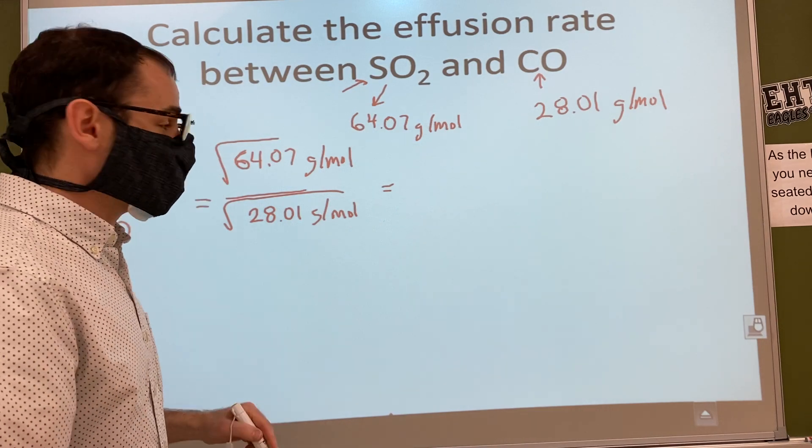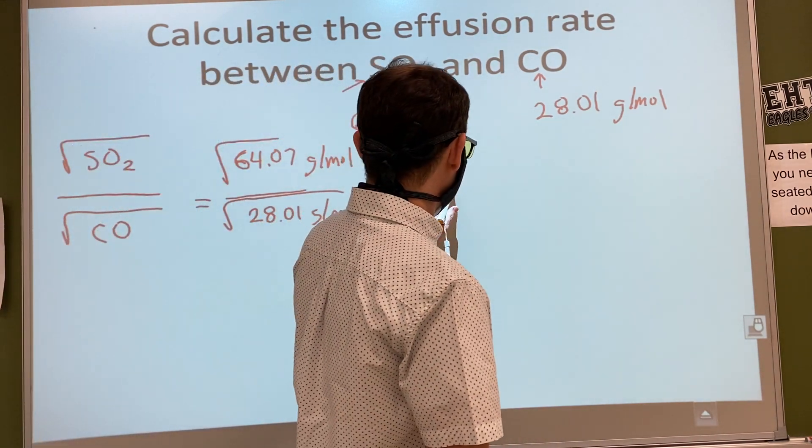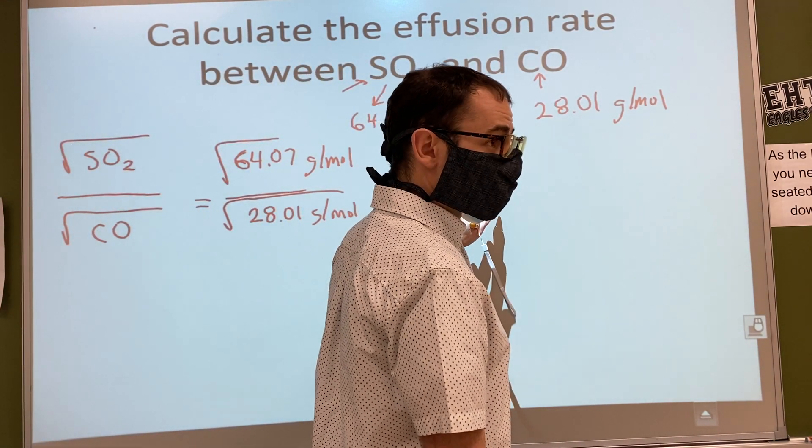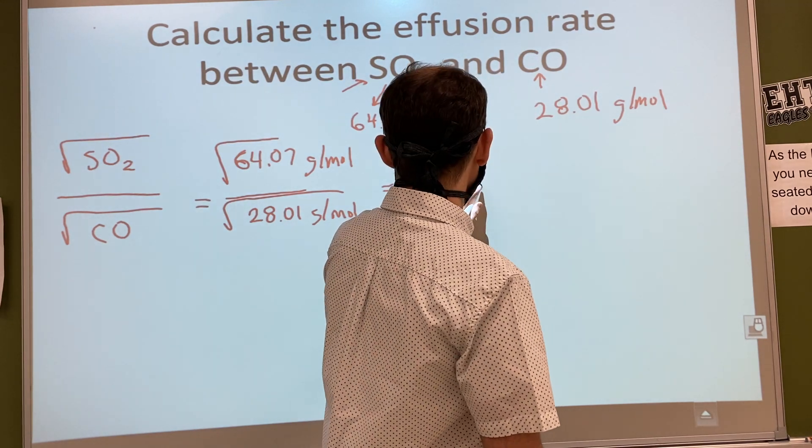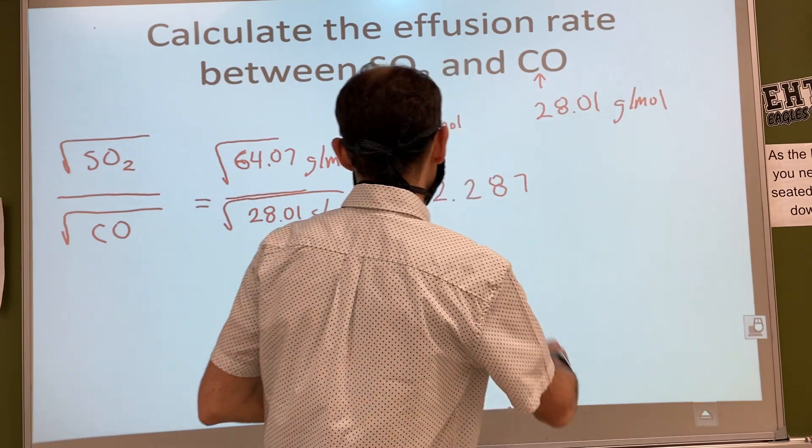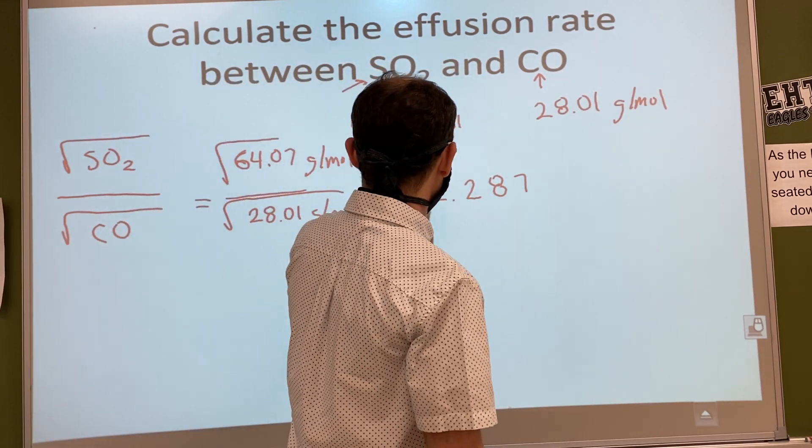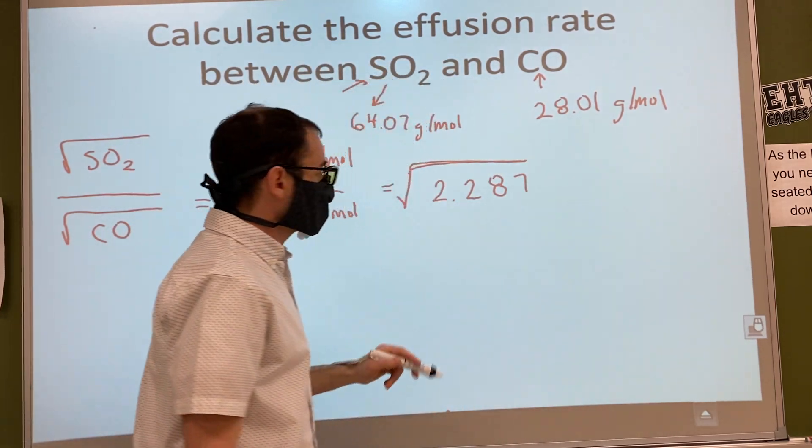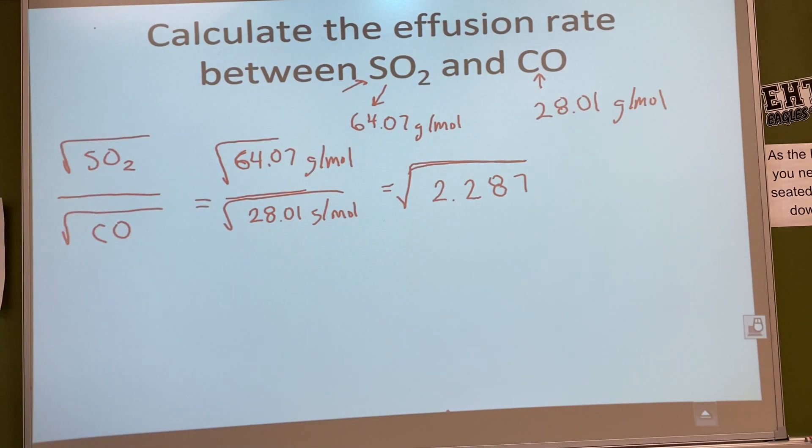Amy, what did you get when you divided these two numbers? 2.287. 2.287? Like that? Okay, cool. And then we still have to square root it, I believe.